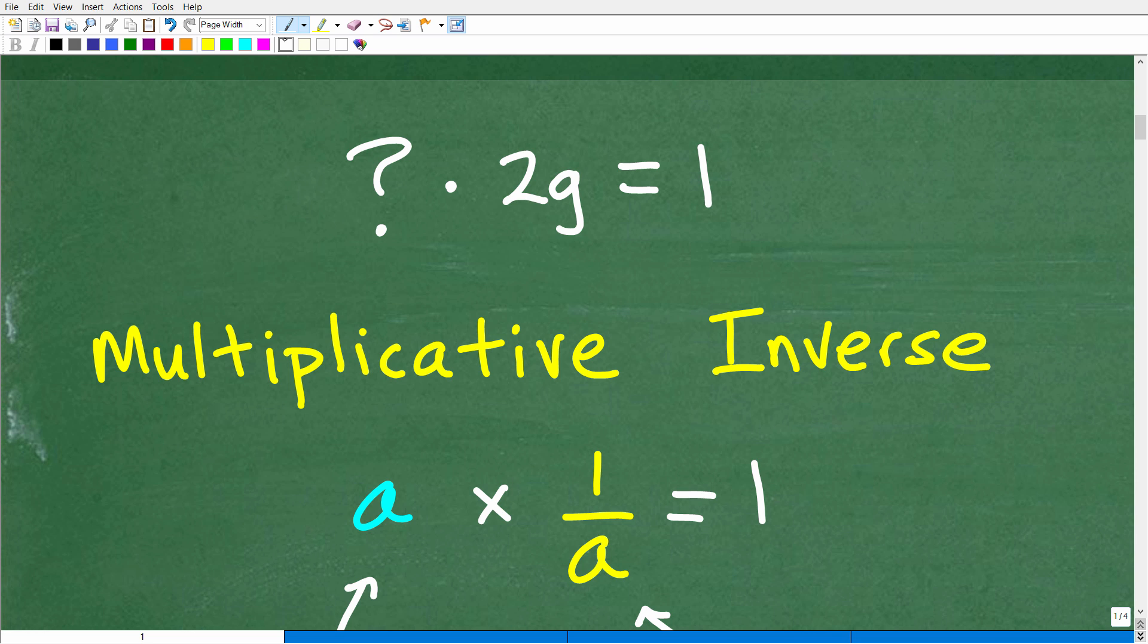And properties in math are effectively laws that we follow. Okay, laws that we follow. And there's properties of numbers, and there's properties of algebra, and then there's properties in geometry. But the one that we're concerned with in this particular problem is something called the multiplicative inverse. And this is a concept that applies to not only just variable terms, like what we're dealing with right here, but numbers as well. So, let's go ahead and get into this right now.